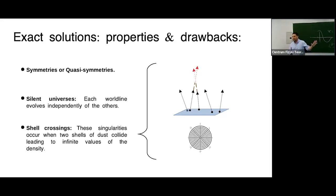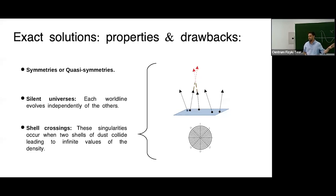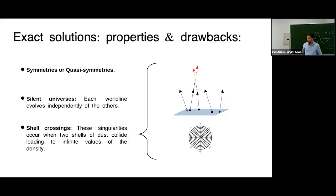The problem is that without pressure and without rotation, nothing stops the worldlines from getting closer — the density goes to infinity and you get shell-crossing singularities. So these solutions are not the final answer; they are toy models to understand large-scale structure formation from a nonlinear relativistic perspective. They are idealized models that have been explored by relatively few people, mostly those working on relativistic cosmology.